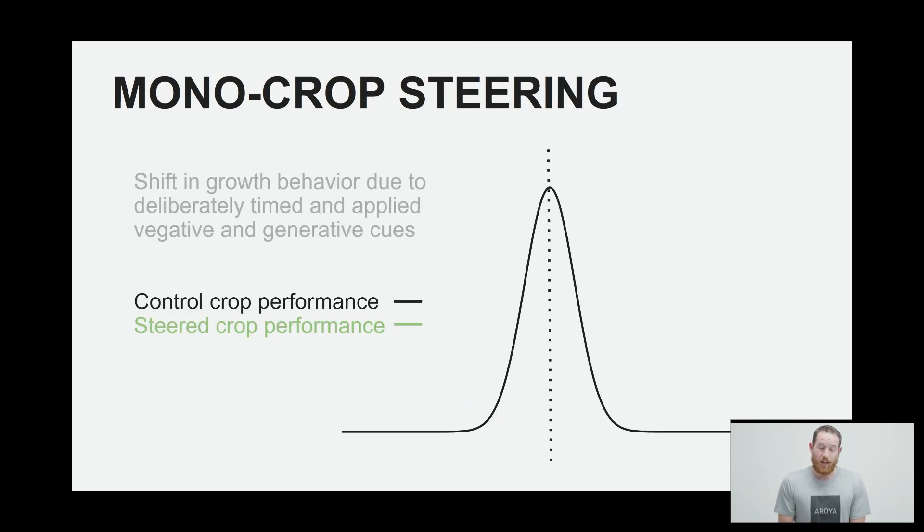Why it's important to achieve that uniformity is because it makes it much easier to crop steer, makes your cultivation processes more predictable, makes your yield totals more projectable. So in this case, we've got a dotted line here at the expected value or average plant weight. In this case, we're going to call the black line the control crop performance. And after we apply some crop steering for deliberately timed and applied vegetative and generative cues, we can steer this crop. This green chart is going to show an effective steering where we have increased the yield or quality on that product by shifting the expected value of the entire population of plant.